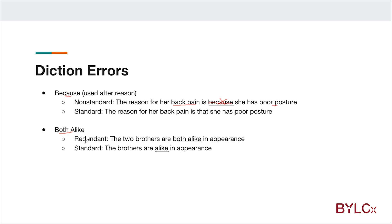Another example: 'The two brothers are both alike in appearance.' This is also a diction error to note — the word 'both' is redundant when used with 'alike.'